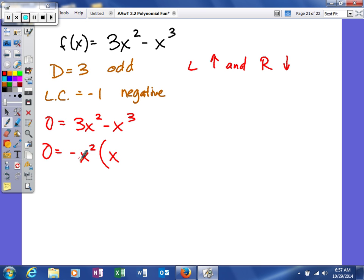So when I divide this by negative x squared, it's going to give me x, and then this divided by negative x squared will be negative 3. At this point in time, I can set both these equal to zero and solve.